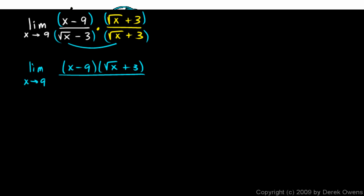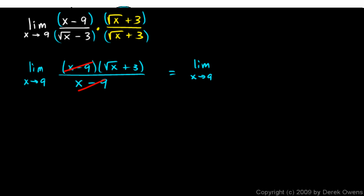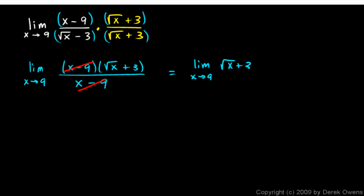When we do the FOIL on the bottom, we have the square root of x times the square root of x, which is x. Then we have the square root of x times 3 and the square root of x times minus 3, and those will cancel each other out. And then we have 3 times minus 3, which is minus 9. So a factor of x minus 9 cancels out, and this is just equal to the limit as x approaches 9 of the square root of x plus 3.